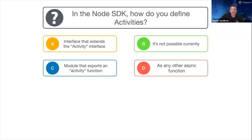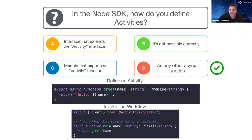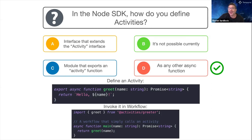Michael and Milad were correct. You can define activities in the Node SDK as any other async function. Here we define an async function named 'greet' and export it - this becomes our activity function. In the workflow code we import it and call it as any other async function.